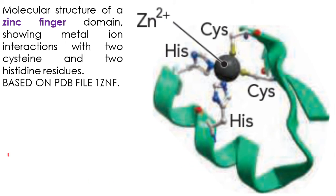This is a zinc finger domain of a DNA binding protein. You can see the zinc 2+ ion, coordinated by histidine 1, histidine 2, cysteine 1, and cysteine 2. The polypeptide chain is folding and bending such that these four residues are coming into close proximity with the zinc ion. This is an example of a zinc finger domain.